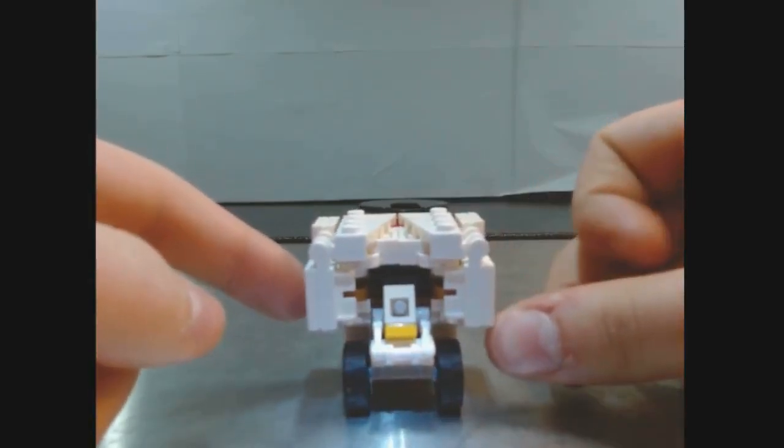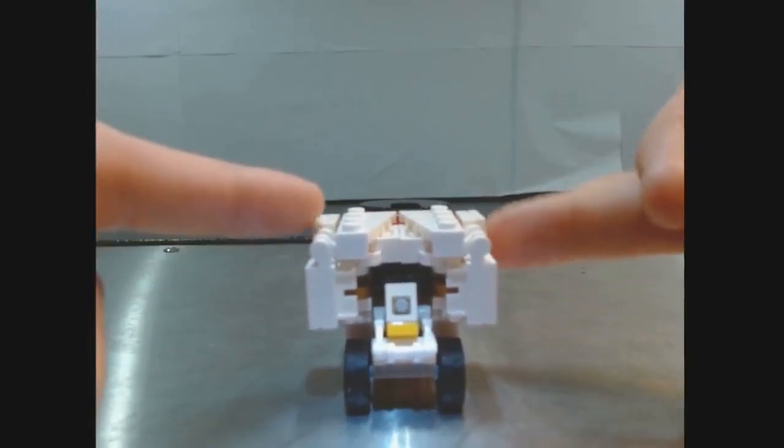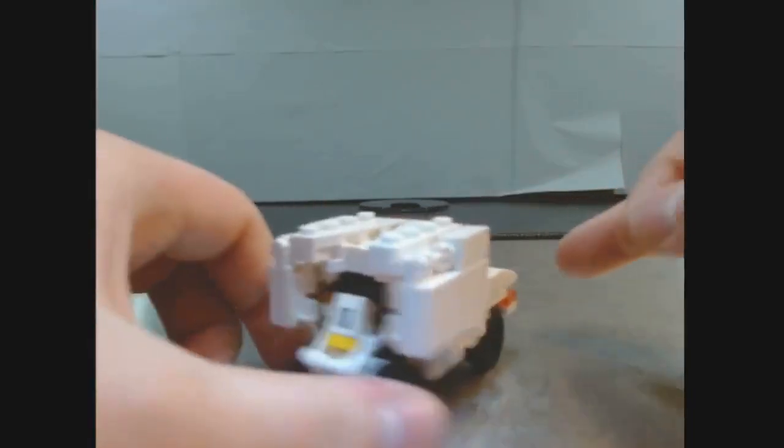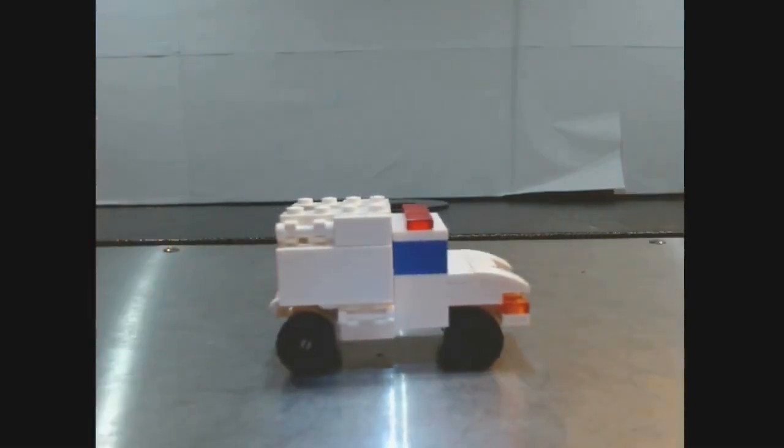But yeah, so he does have the wheels that are more tightly back to the frame compared to, you know, the size of the vehicle. And that's just accurate to how ambulances actually are. Because ambulance boxes are just put on, like, Ford truck chassis.